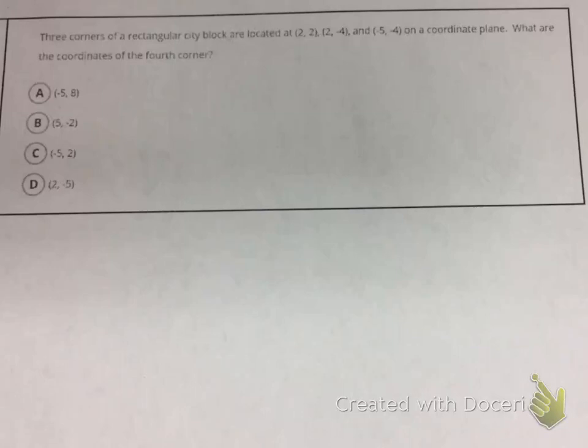Question number 5 says three corners of a rectangular city block are located at 2 comma 2, 2 comma negative 4, and negative 5 comma negative 4 on a coordinate plane. What are the coordinates of the fourth corner?